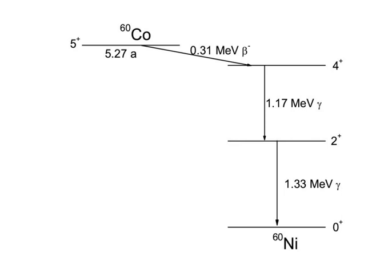The arrows indicate the emitted particles. For the gamma rays, the gamma energies are given; for the beta decay oblique arrow, the maximum beta energy.